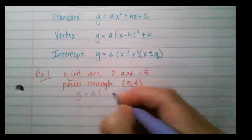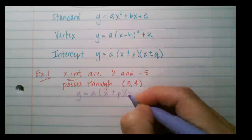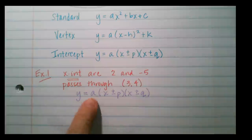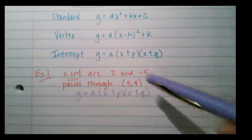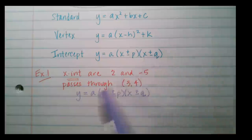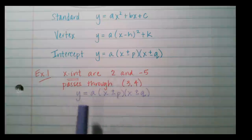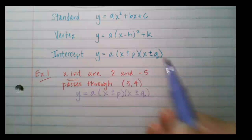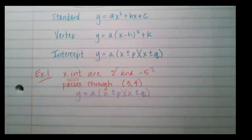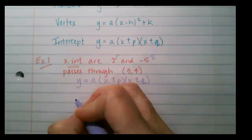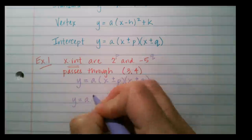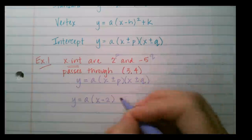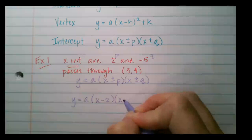For intercept form I start with a times (x plus or minus p) times (x plus or minus q). The only thing I don't know is a. Since the x-intercepts are 2 and negative 5, I can write y equals a times (x minus 2) times (x plus 5).